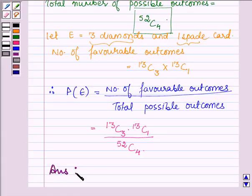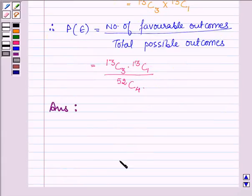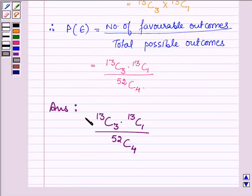Hence, our answer is the probability of drawing 3 diamonds and 1 spade card is 13C3 into 13C1 upon 52C4. This is our answer.